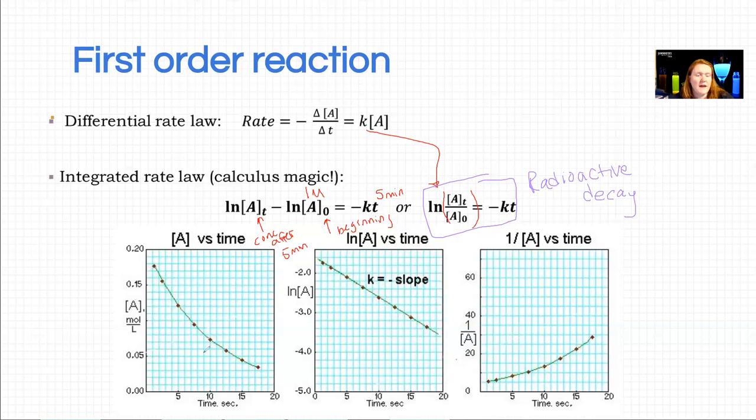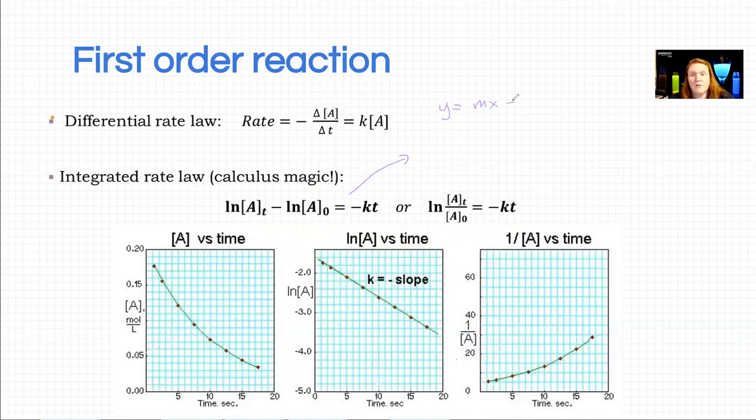So when we plot the zero order graph [A] versus time, we find that it is not linear. When we plot ln[A] versus time, we find that it is linear. And the reason for that is because if I rearrange this equation here just a little bit, we can put it into the format y equals mx plus b, which is a line.